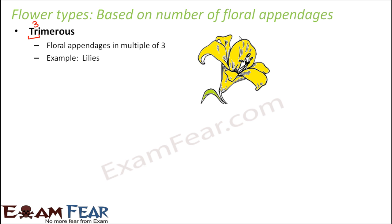For example, lily. When I say floral appendage, I am talking about the floral parts — maybe the petals. In lily, you have one, two, three, four, five, six petals, which is a multiple of three. So this is a trimerus flower. Trimerus flowers can have three appendages, six appendages, or nine appendages — anything in multiples of three.